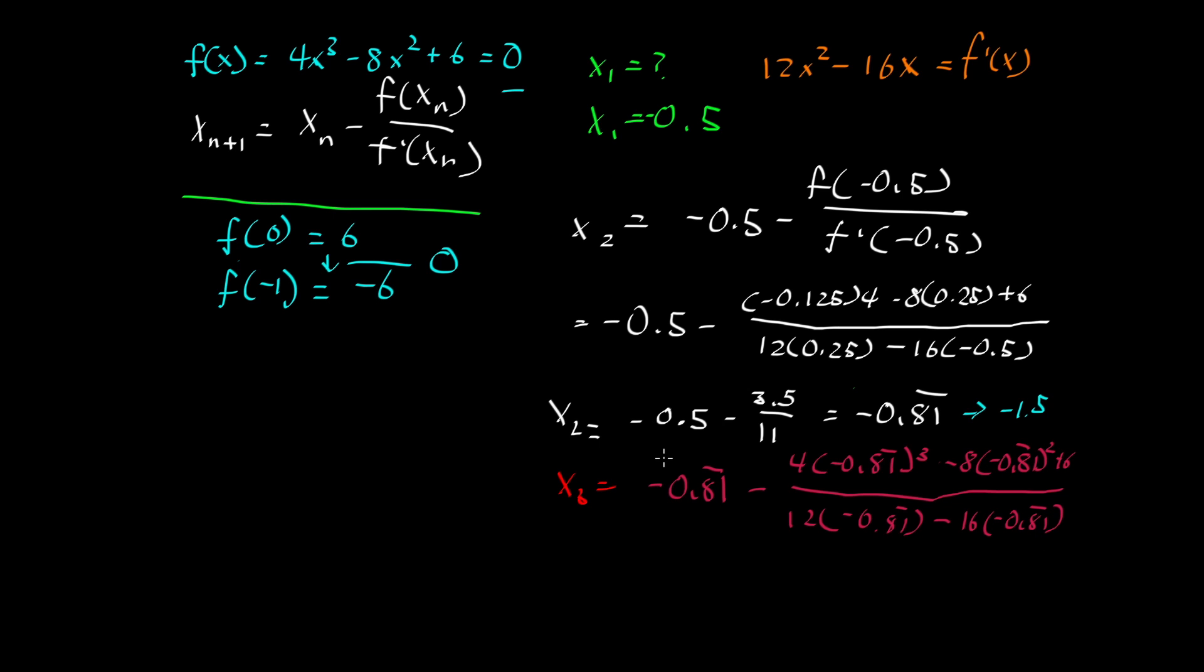So x_3, I'll do this in magenta, it's going to be -0.81 repeating minus 4 times (-0.81 repeating)³ minus 8 times (-0.81 repeating)² plus 6 over 12 times (-0.81 repeating)² minus 16 times (-0.81 repeating). Now you may be asking, before we finish, why would we go through all this trouble, all these decimals, trying to find this? Can we just factor and solve? Well, of course you could do that, or you can use quadratic equation.